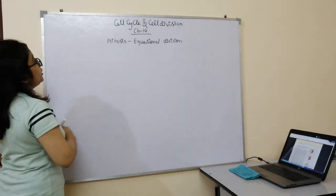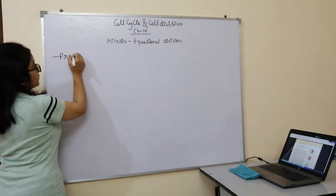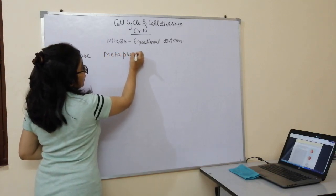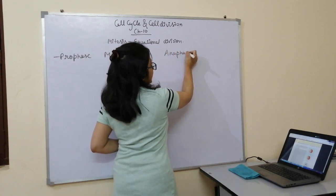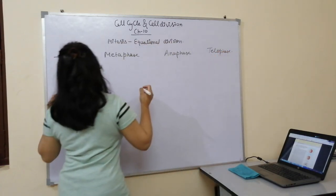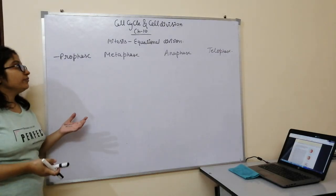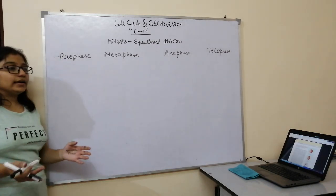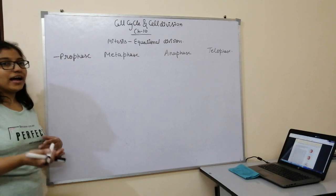In mitosis, which is the equational division, there are four stages: prophase, metaphase, anaphase, and telophase. These divisions are made for our convenience — in reality, there are no clear-cut demarcations between stages.